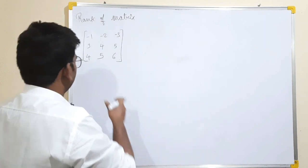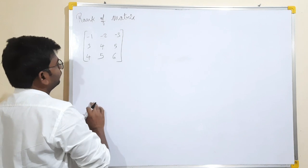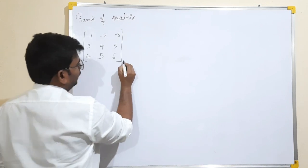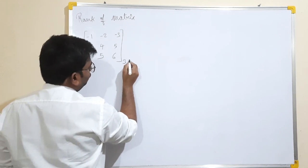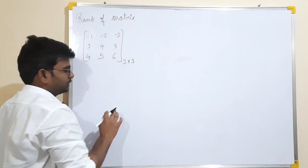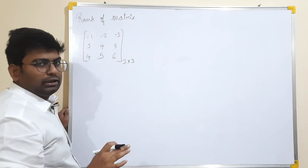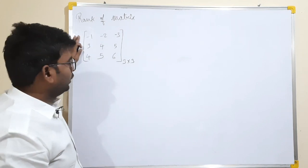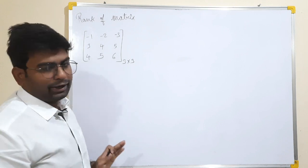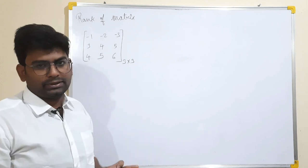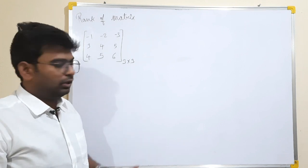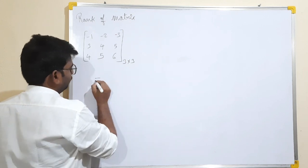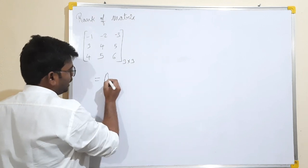So, in my topic, the matrix is the rank of the matrix — a 3 into 3 matrix. This is the rank of the matrix. For a 2 into 2 matrix, the rank is AD minus BC.